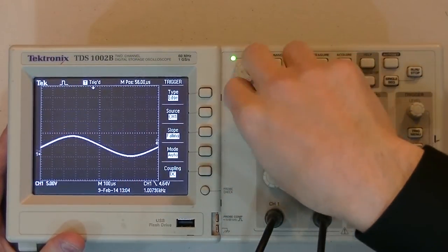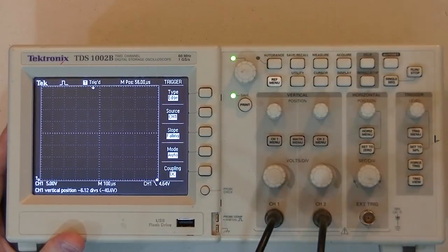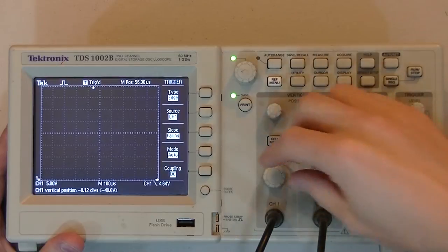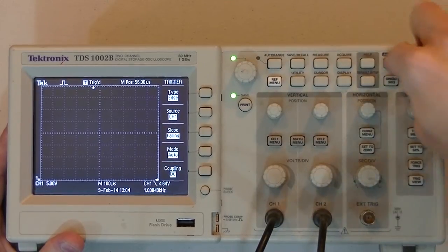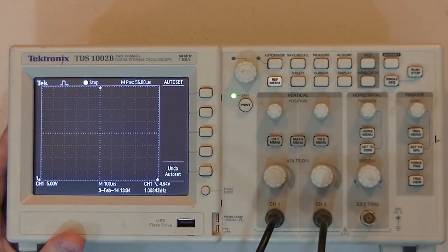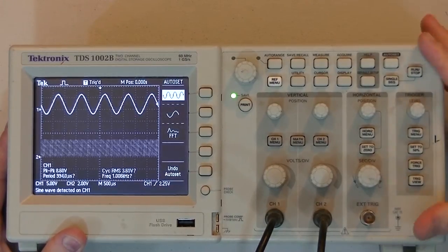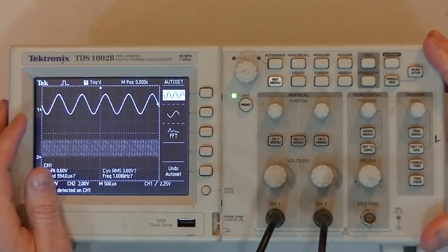Really quick one. Let's say your settings are all messed up and you just don't know what to do. Push the auto set button on most of the newer oscilloscopes and it will go ahead and find your signals and put them both, you know, or put however many you have on screen.